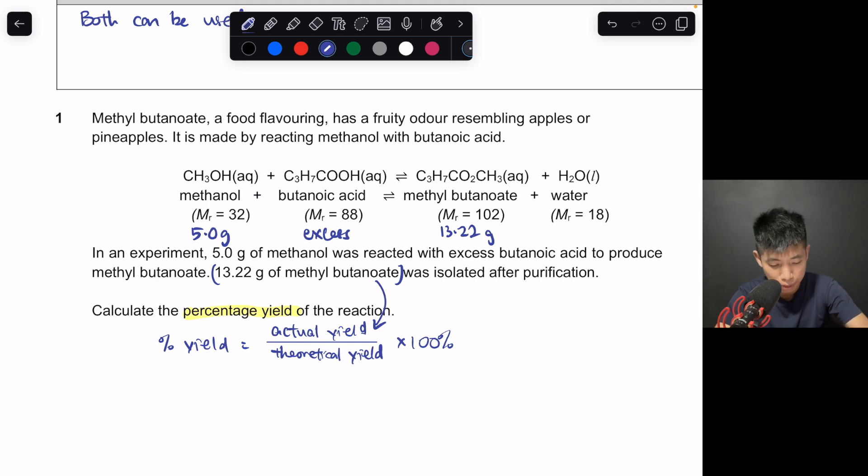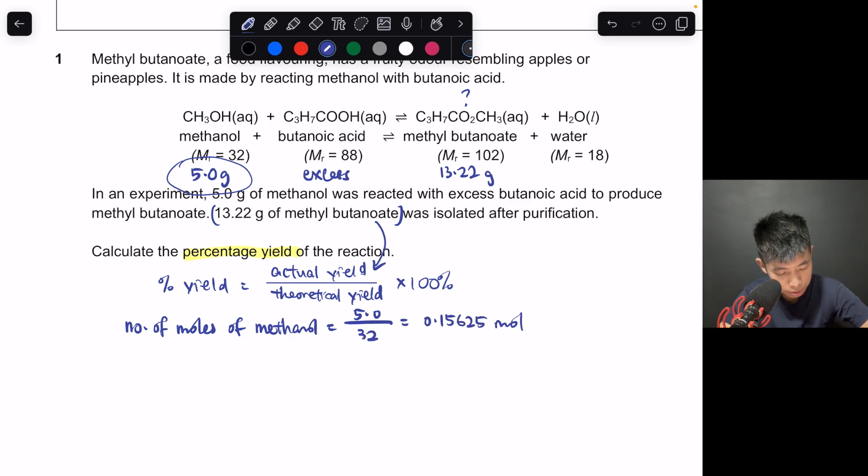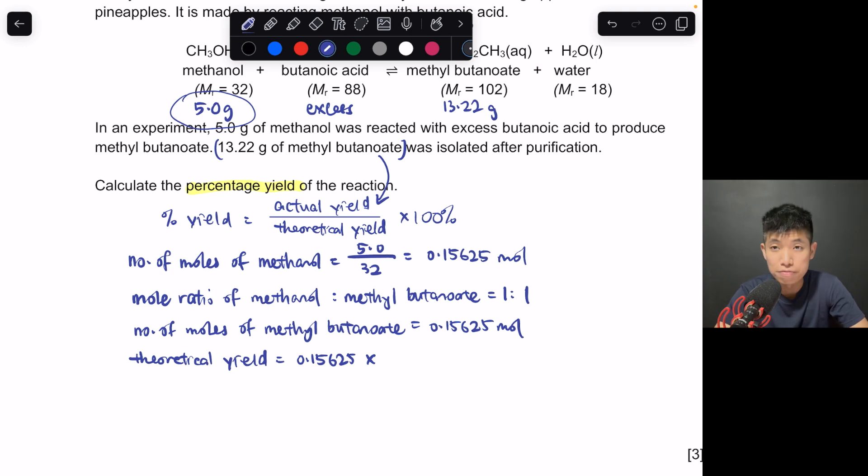That means by right, if I put in 5 grams of methanol, what is the amount that I should get? You can use your mole ratio. So the first step is to find number of moles. Number of moles of methanol is the mass over MR. If we want to find methyl butanoate, we do the mole ratio. We will expect to get 0.15625 moles of methyl butanoate. And from there, if you times the MR, which is 102, you should expect 15.93 grams. So we can sub in the value. This is your theoretical. Then this is your actual. So your final answer here should be 82.9%. So you realize that this is quite similar to stoichiometry, just that we have one additional step where you have to sub in the actual and theoretical yield to do the percentage calculation. So that will be the part that is new to you over here.